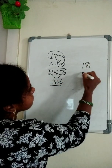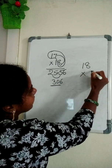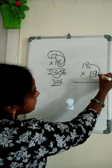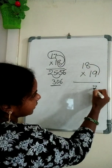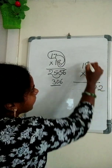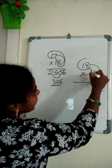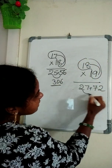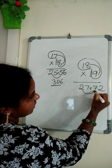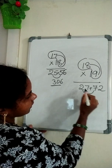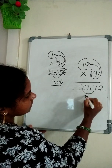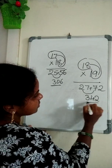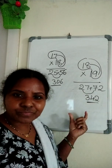18 nineteens. First, 8 nines — 72. 18 plus 9 is 27. Now 27 plus this 7 is 34. And this last 2. So 342.